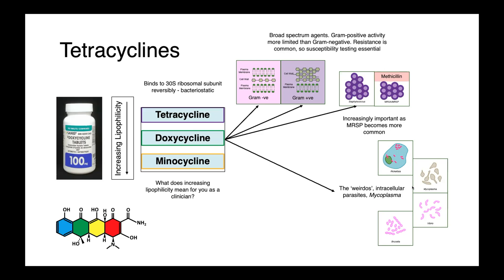Looking at some specific examples where the tetracyclines have activity, as a class, they're great against staphylococci, including methicillin-resistant Staphylococcus intermedius, which we can encounter in our companion animal species, and then many of our unusual bacteria, the weirdos.